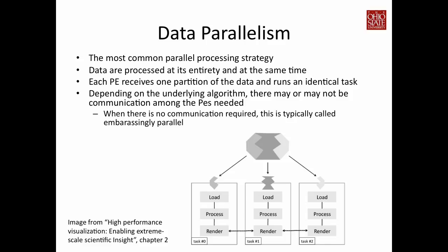Now let me mention different types of parallelism when utilizing supercomputers for data processing and visualization. The first is data parallelism, the most common strategy. We assume you need to process the entire data simultaneously because its total size is larger than any single processing node's local memory. You partition the data into small pieces and give each processing element one partition. Each PE then runs identical tasks. When there is no communication required between PEs, this is the best scenario — typically called embarrassingly parallel.